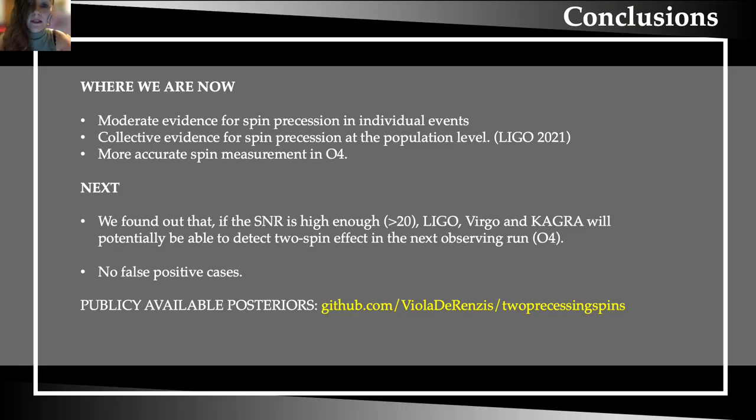To conclude, we can say that at the moment there are just moderate evidence for spin precessions in individual events, even if current data show a much stronger collective evidence for precessing spins at a population level. The future upgrades to the LIGO, Virgo and KAGRA detectors will allow us to obtain increasingly more accurate spin measurements and in this work we found out that with the highest SNR that will be reached in the next observing run, it will be possible to detect not only spin precessions but also two precessing spins in single events. And the last thing that I want to say is that all the results that we show in this presentation are publicly available on GitHub in order to facilitate further exploration. Thank you for the attention.